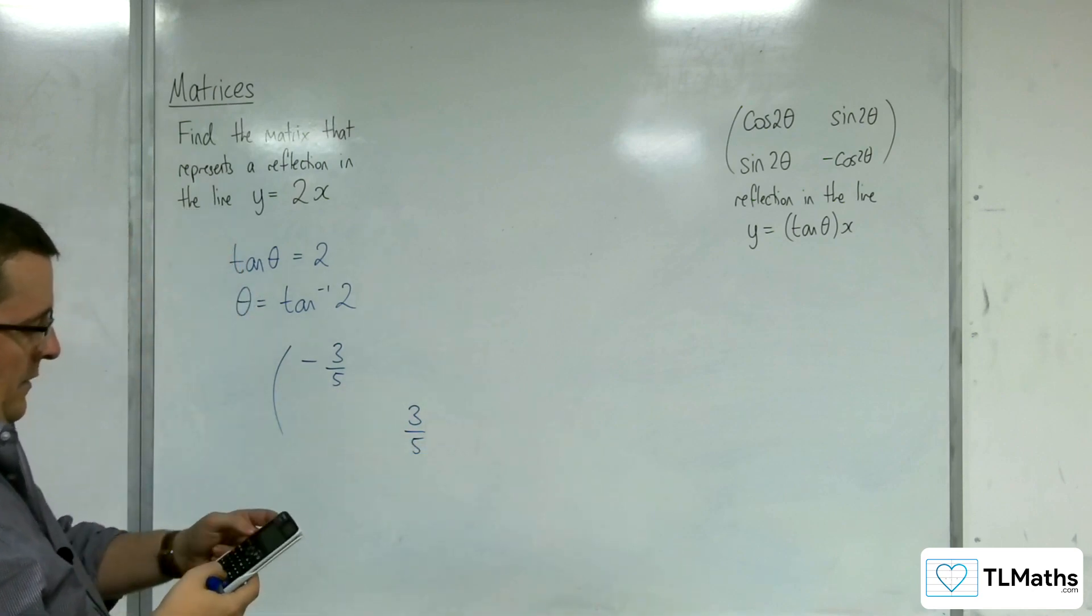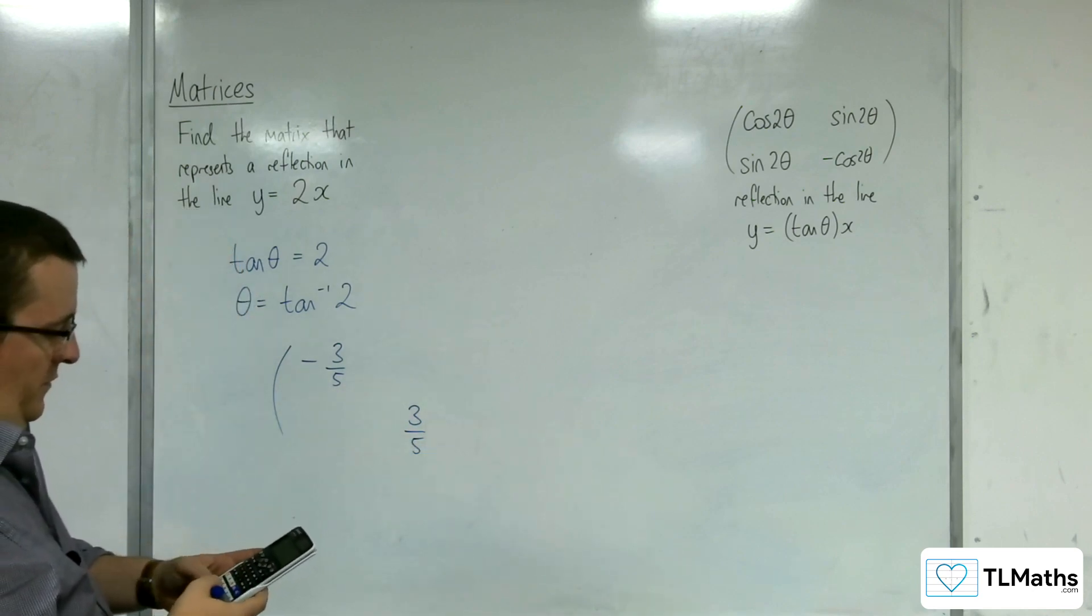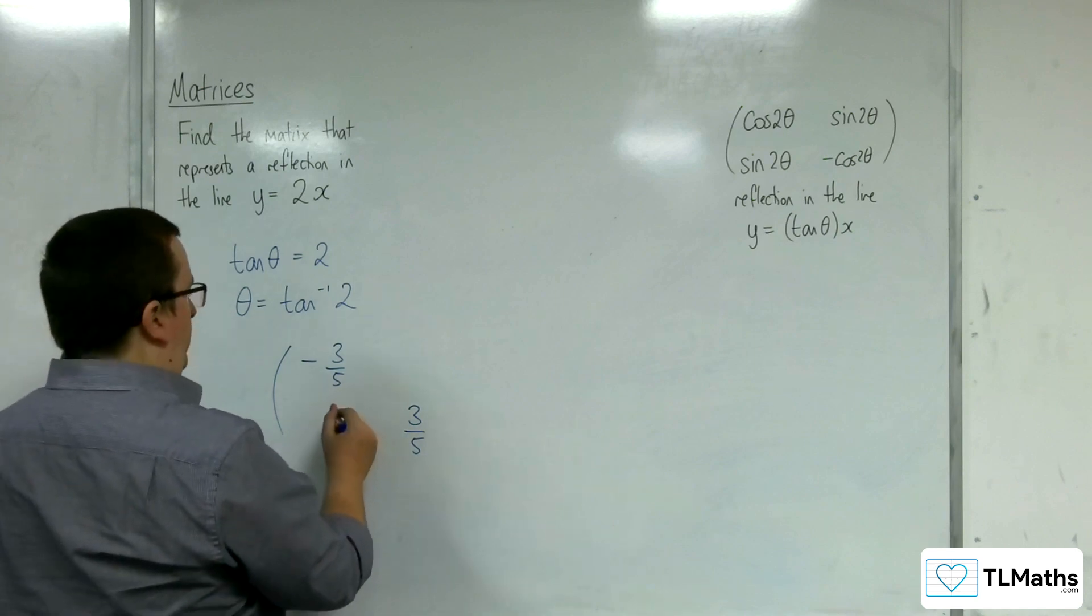And inverse tan of 2, sine of 2 times that answer is 4 fifths.